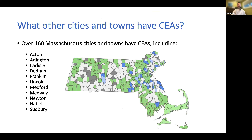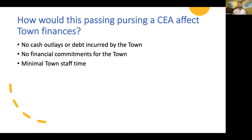Over 160 cities and towns in Massachusetts have already established CEAs, including many of our peer communities. Adopting a CEA would put us on very well-traveled ground in the state. Very importantly, there are no upfront cash outlays by the town to enter into a CEA. The town would hire a consultant who does much of the work, including helping to educate the public, prepare a request for proposal for energy suppliers, prepare documents for state regulatory review, and other tasks. The consultant does not charge the town for this work — it is paid by the utility for the duration of the aggregation contract.